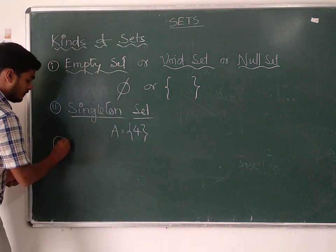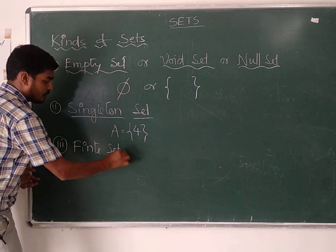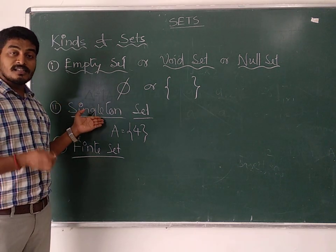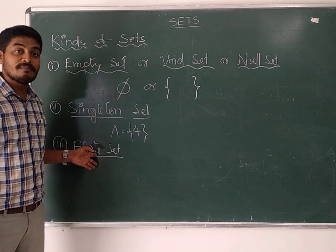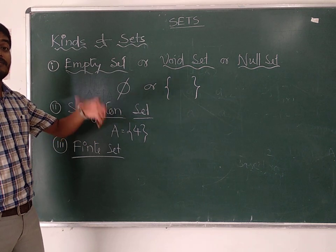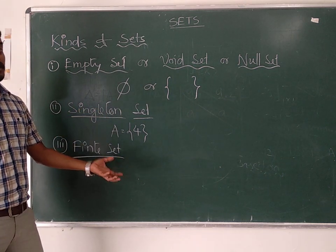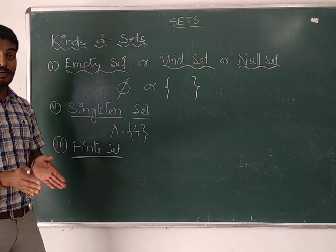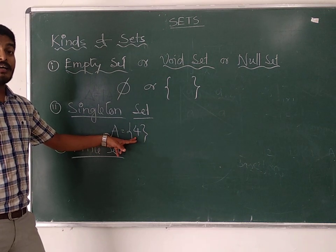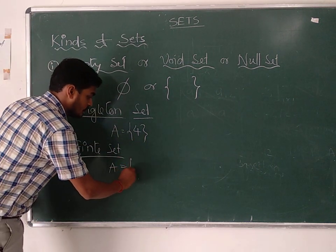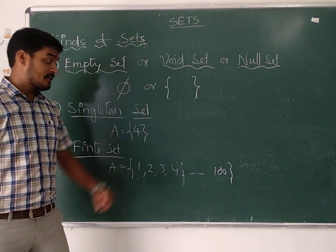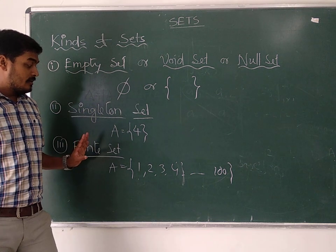The third type is the finite set. Depending upon the number of elements, sets are named accordingly. A finite set is a collection where you can easily state the total number of elements exactly. For example, {1, 2, 3, 4} is a finite set. A set with elements from 1 to 100 is also a finite set — you can say exactly there are one hundred elements.